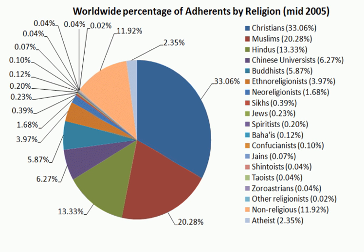Jainism was established by a lineage of twenty-four enlightened beings culminating with Parsva and Mahavira. The twenty-fourth Tirthankara of Jainism, Mahavira, stressed five vows, including Ahimsa, Satya, Astya and Aparigraha. Jain orthodoxy believes the teachings of the Tirthankaras predate all known time, and scholars believe Parsva, accorded status as the twenty-third Tirthankara, was a historical figure. The Vedas are believed to have documented a few Tirthankaras and an ascetic order similar to the Shramana movement.